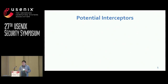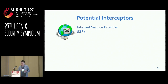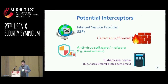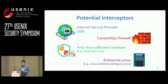Who would potentially intercept our DNS queries? We can firstly think of internet service providers — their middleboxes in the network are able to do this. Besides, other devices such as firewalls, antivirus software, and enterprise proxies are also potential interceptors. For example, AWS software provides a default-on functionality that redirects all DNS requests from the client-side to an AWS DNS server in an encrypted channel.